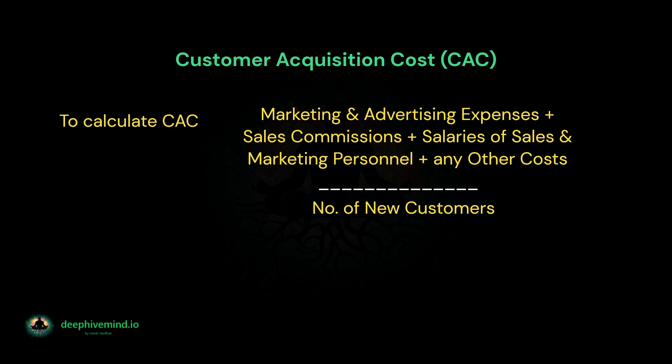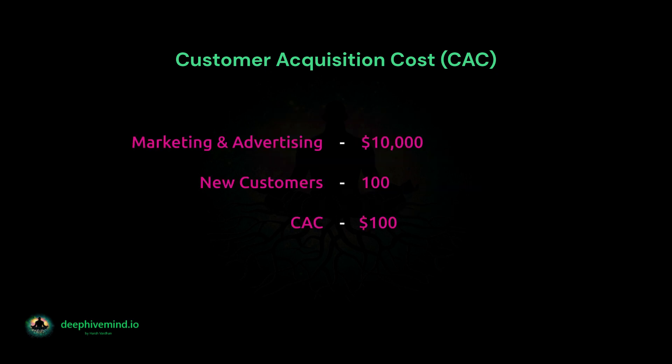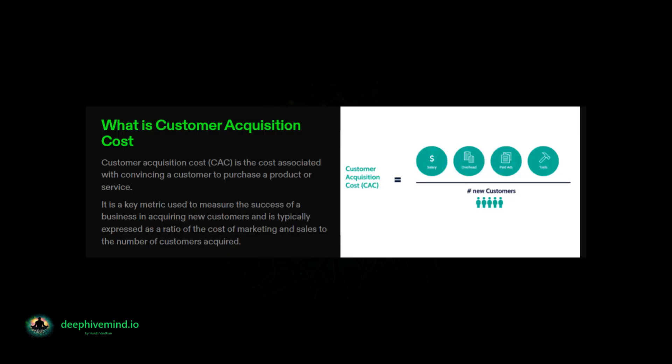For example, if a business spends ten thousand dollars on marketing and advertising in a month and acquires 100 new customers during the same period, the CAC would be one hundred dollars — ten thousand dollars divided by 100. CAC is an important metric for businesses because it helps them determine the effectiveness and efficiency of their marketing and sales efforts. By tracking CAC over time, businesses can identify trends and adjust their strategies to optimize their customer acquisition costs.